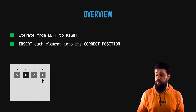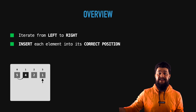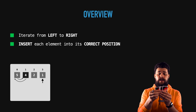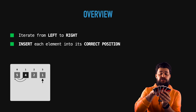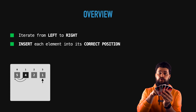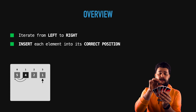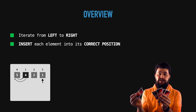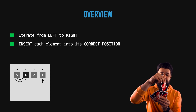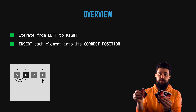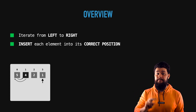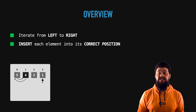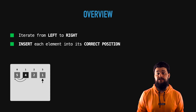Rule number two: imagine you have a deck of cards — you pick up each card, go from left to right, take each individual card, and position it into its correct position. So this is rule number two: take each individual element and position it into its correct position.